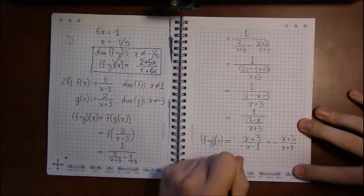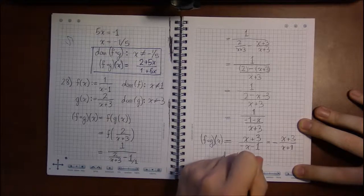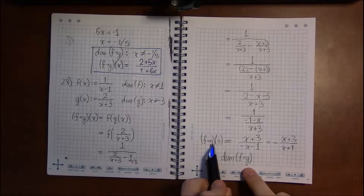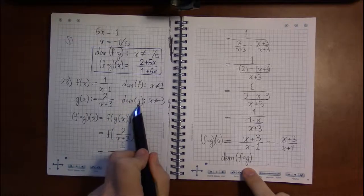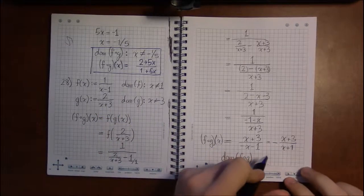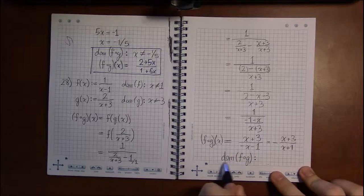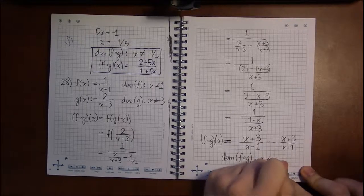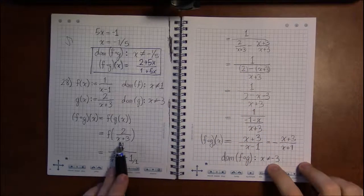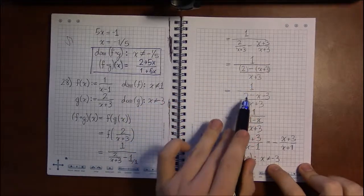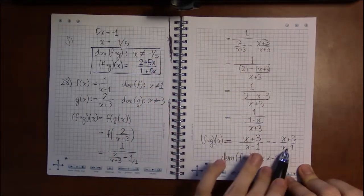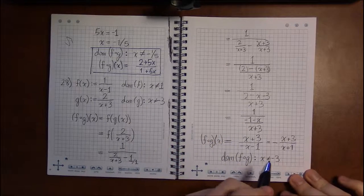Now we need to find the domain of this function. Since x goes into g first, we apply the restriction from g: negative 3 cannot go into g or we'd be dividing by 0. We need x values that work at every step, so x cannot equal negative 3.